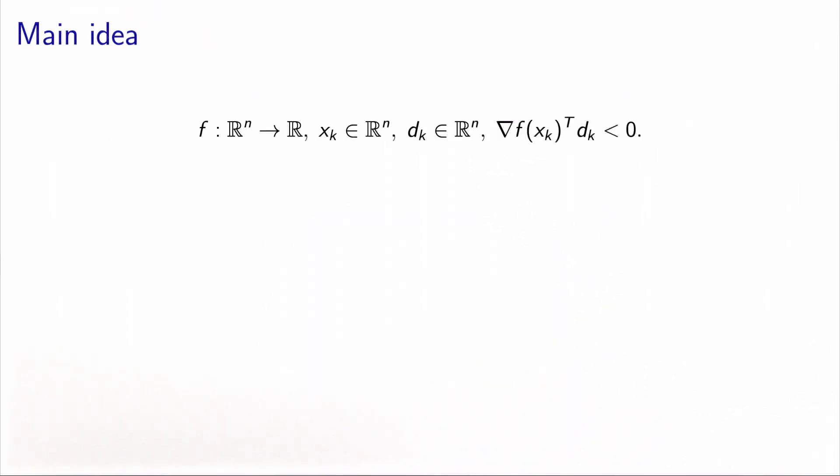So we are again in the same context as before. We have an objective function f of n variables, a current iterate xk, and a descent direction dk. So the directional derivative is negative.